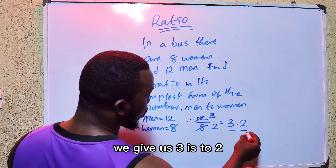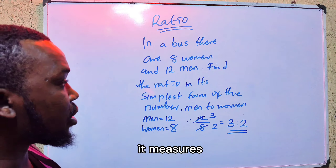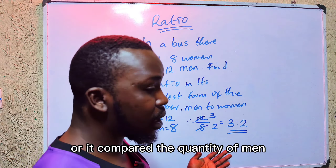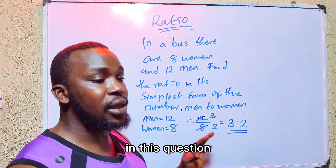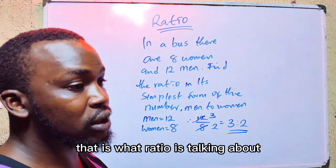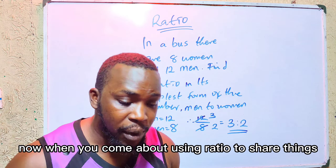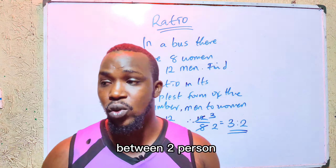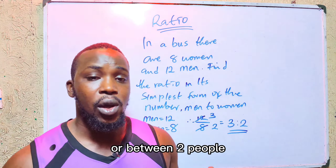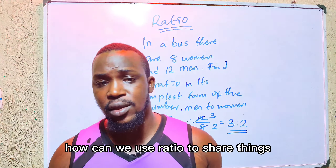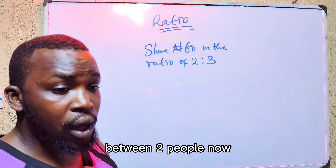Now today let's talk about ratio. Ratio is a quantity relation of amount of two items — a quantity relation of amount of two items. Ratio can also be defined as what is used to measure two quantities of something.